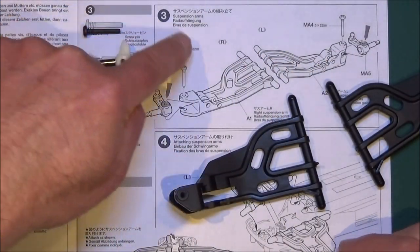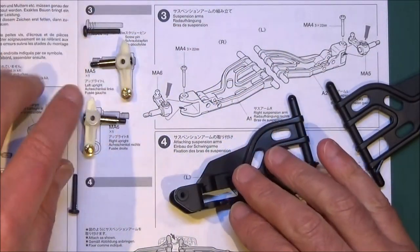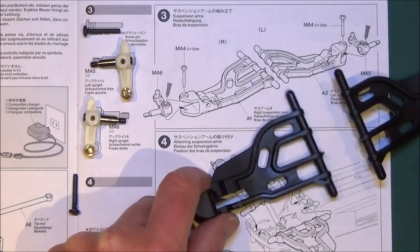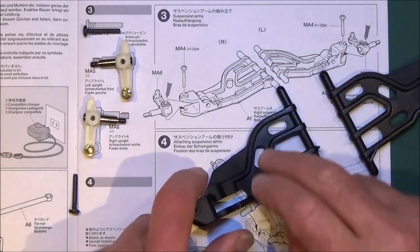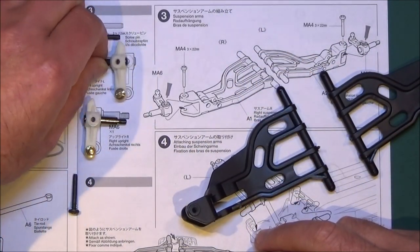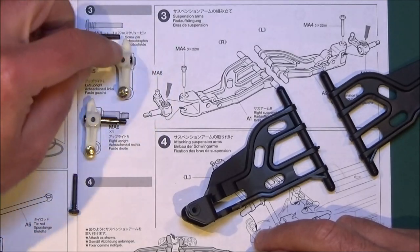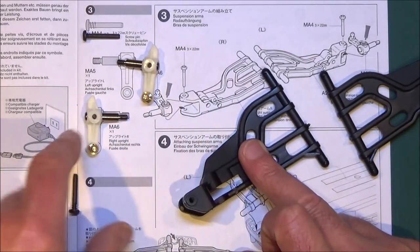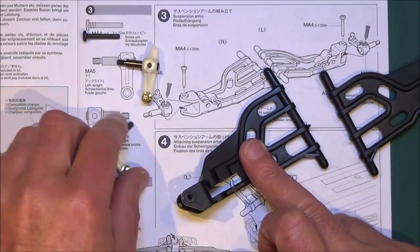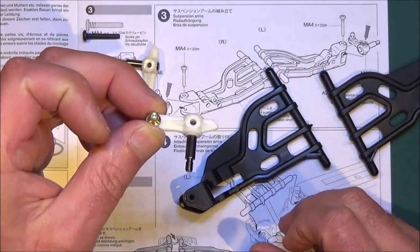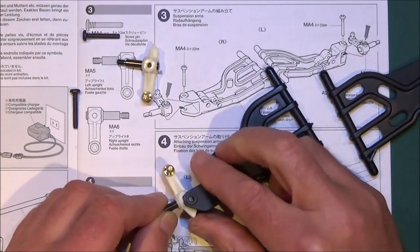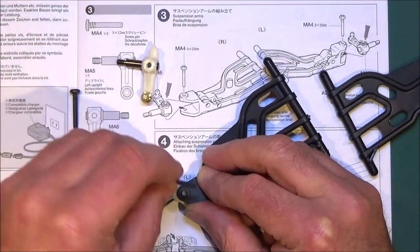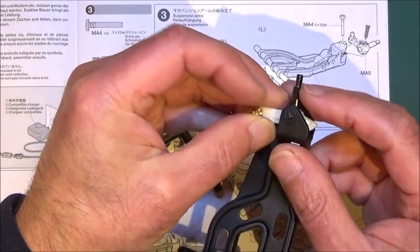On to part 3, which is the suspension arms. Basically, we're putting the steering arms and the axles onto the suspension arms. Line the parts up like it shows in the diagram. They're one-to-one, exactly the same scale. Use your steering arms, get the right side and MA6, position that in there, and hold it in place with one of the screw pins.